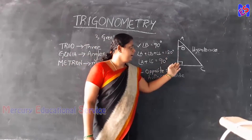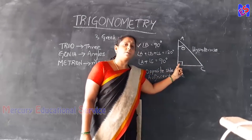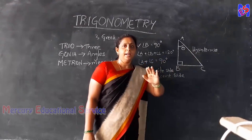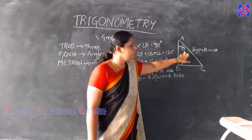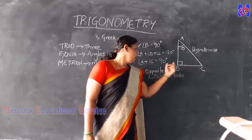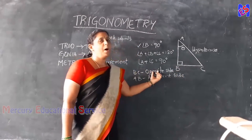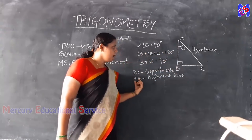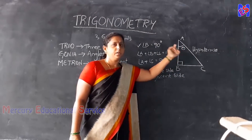In triangle ABC, it is a right angle triangle. The side opposite to the right angle is called hypotenuse. Taking theta at A, BC is opposite to theta, so BC is called the opposite side. The remaining side is called the adjacent side to theta.